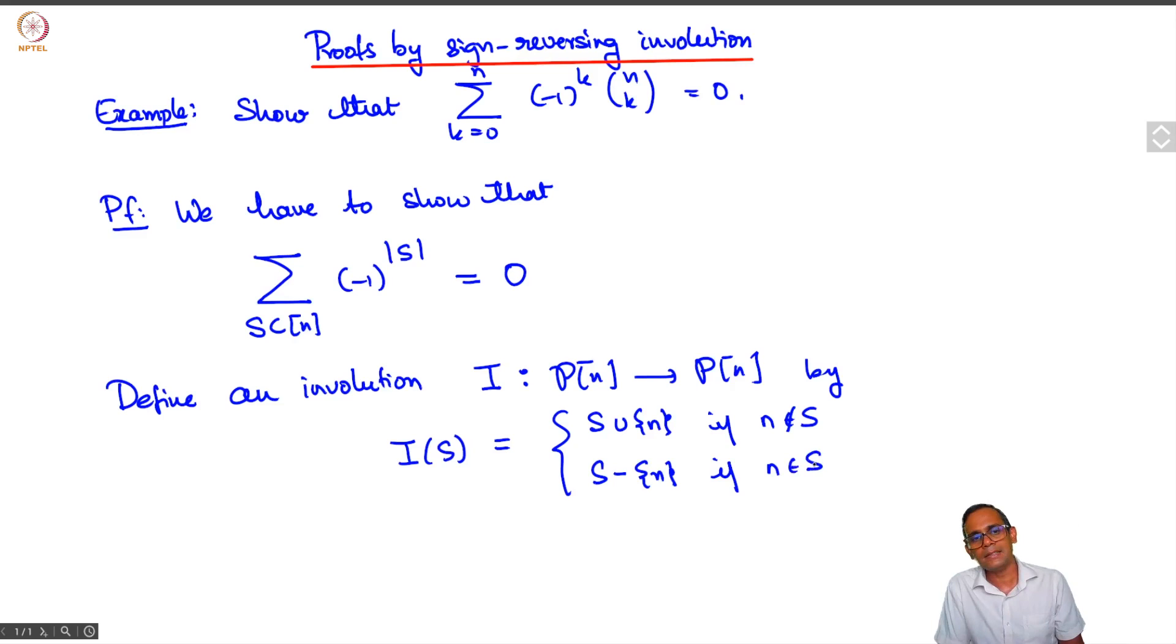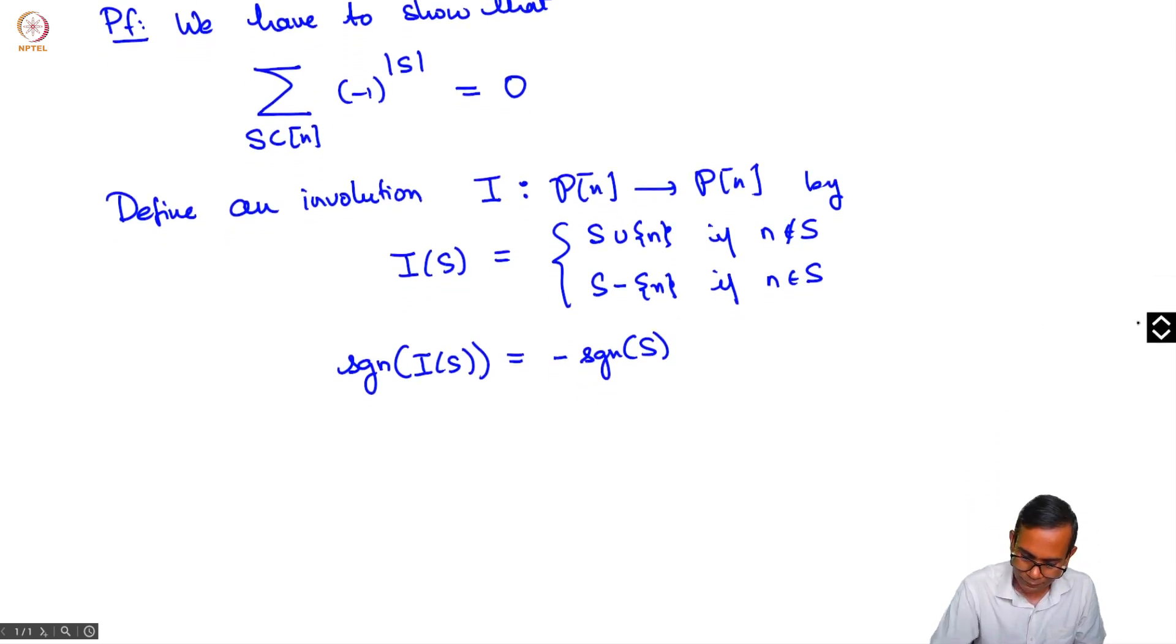If n is in the set s, remove it; if n is not in the set s, you add n to it. The order of s changes by exactly 1 and so the sign of I(s) is the negative of the sign of s. Here what I mean by sign of s is minus 1 raised to cardinality of s.